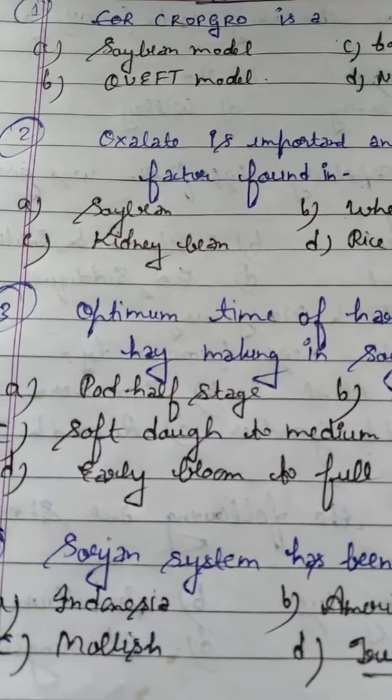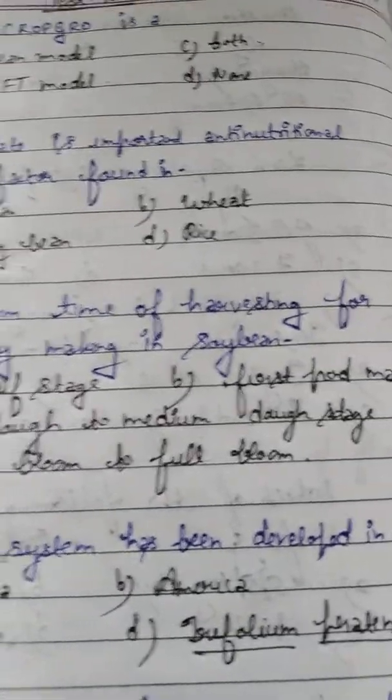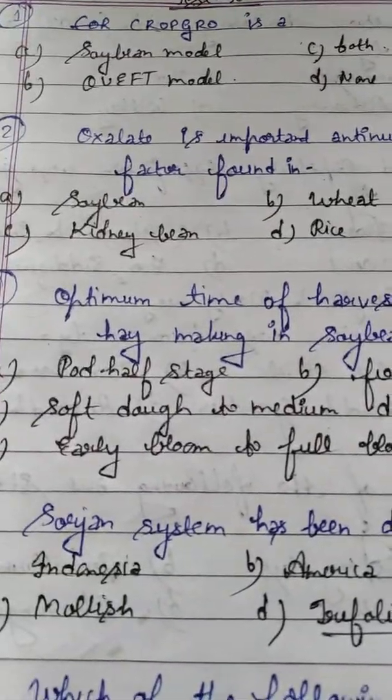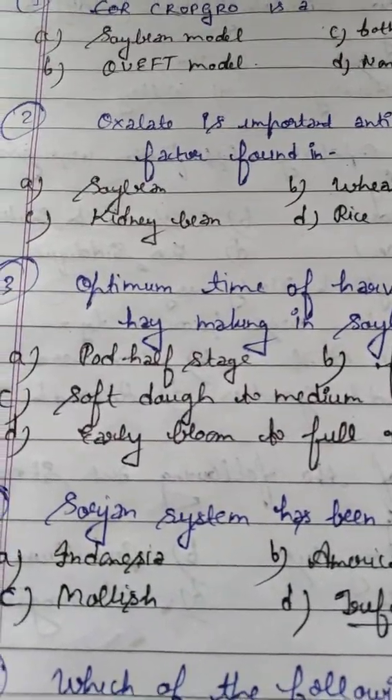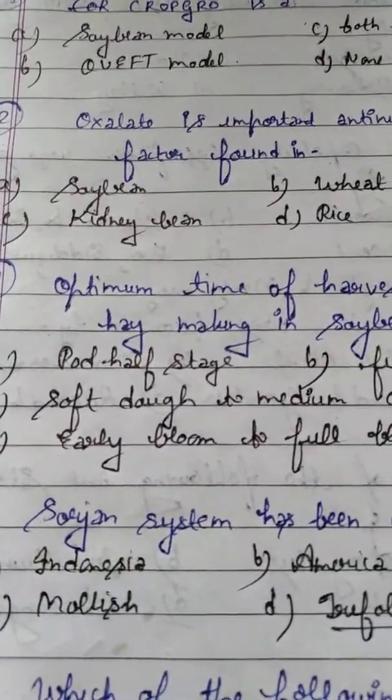Student, question number 2: Oxalate is an important anti-nutritional factor found in which of the following? Option A: Soybean. Option B: Wheat. Option C: Kidney bean. Option D: Rice.